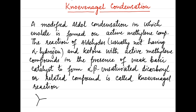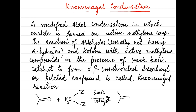Consider for example this reaction of a carbonyl compound, be it aldehyde or ketone, with a methylene group bonded with two electron withdrawing groups, denoted by Z. In the presence of a basic catalyst, these condense to form an unsaturated compound with the loss of a water molecule.